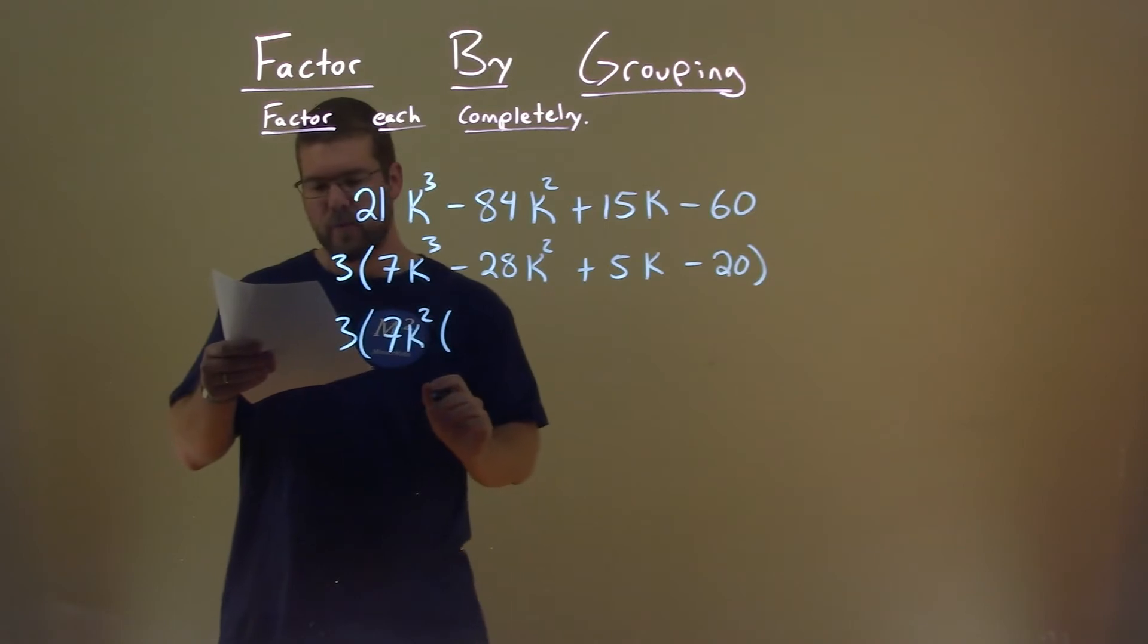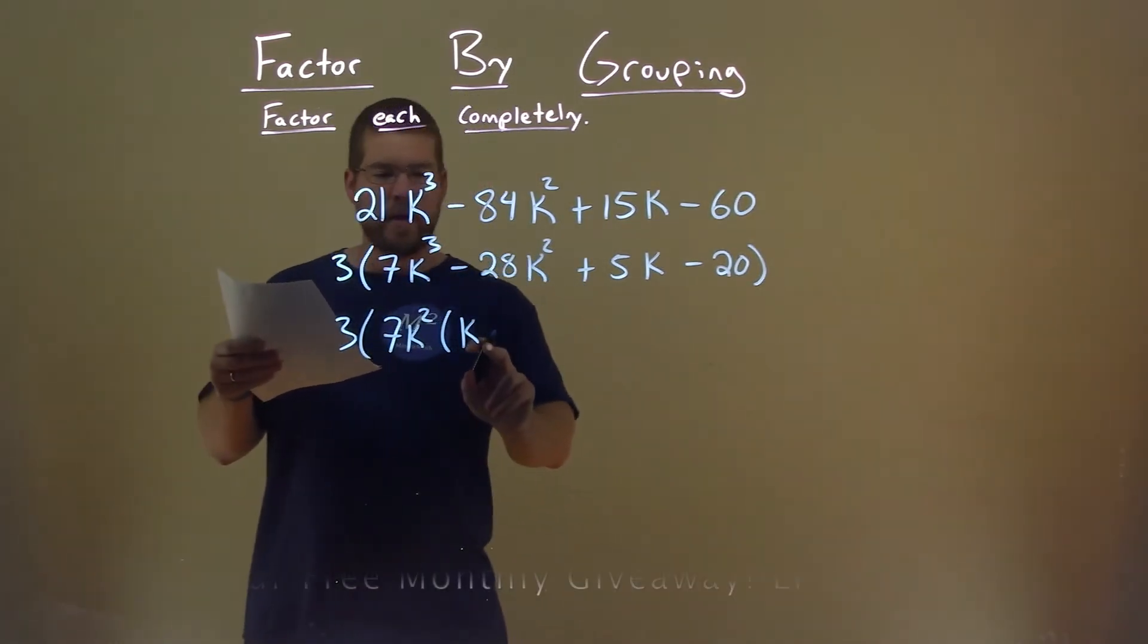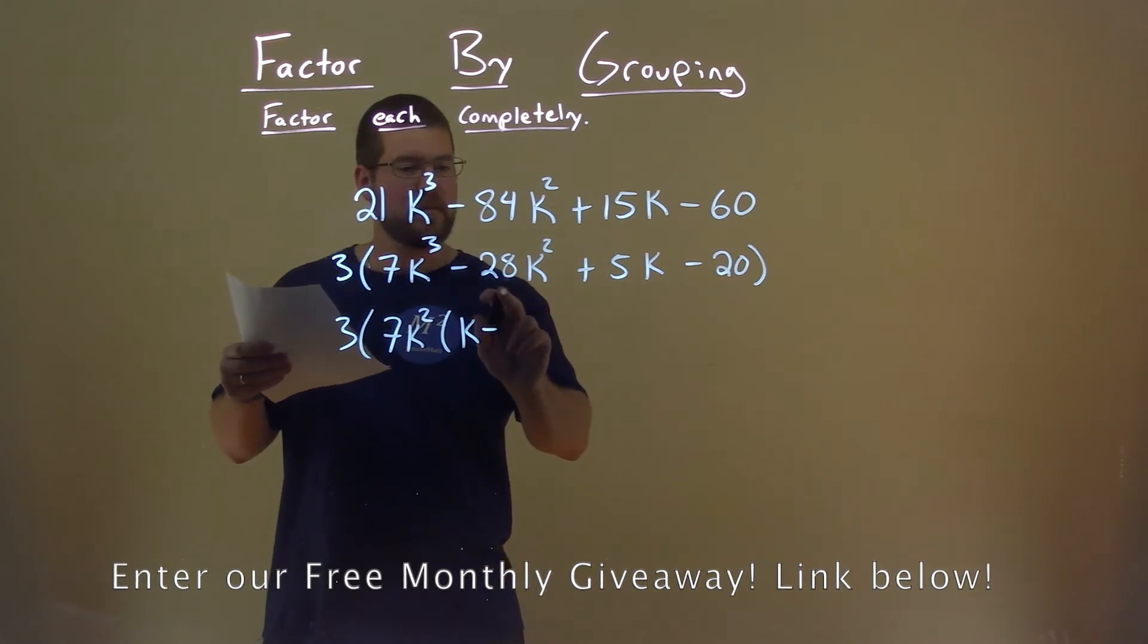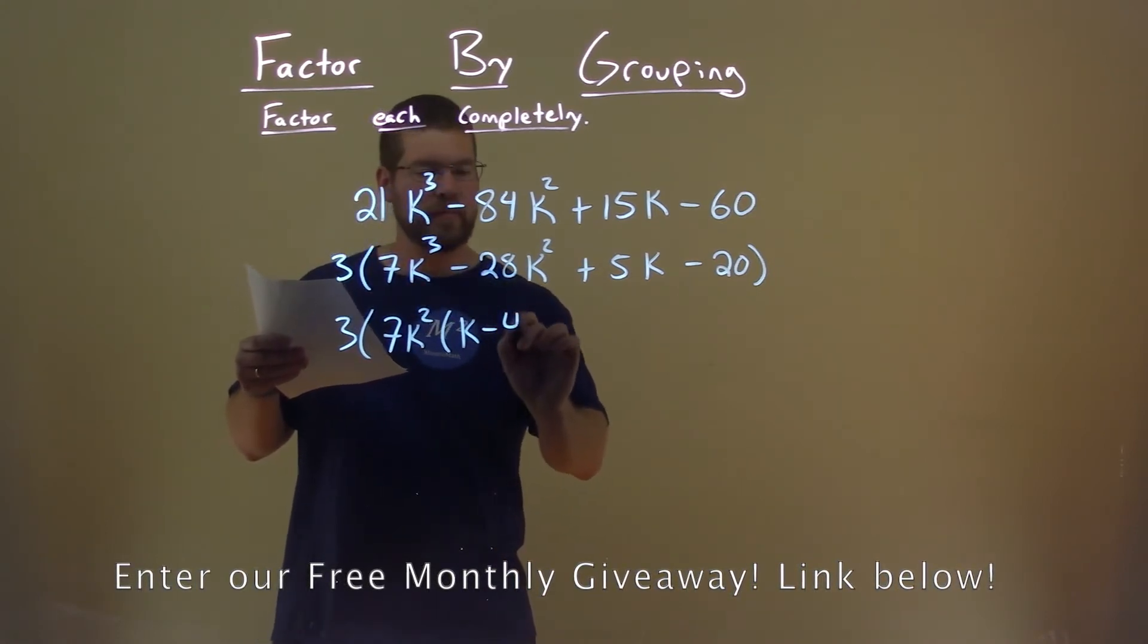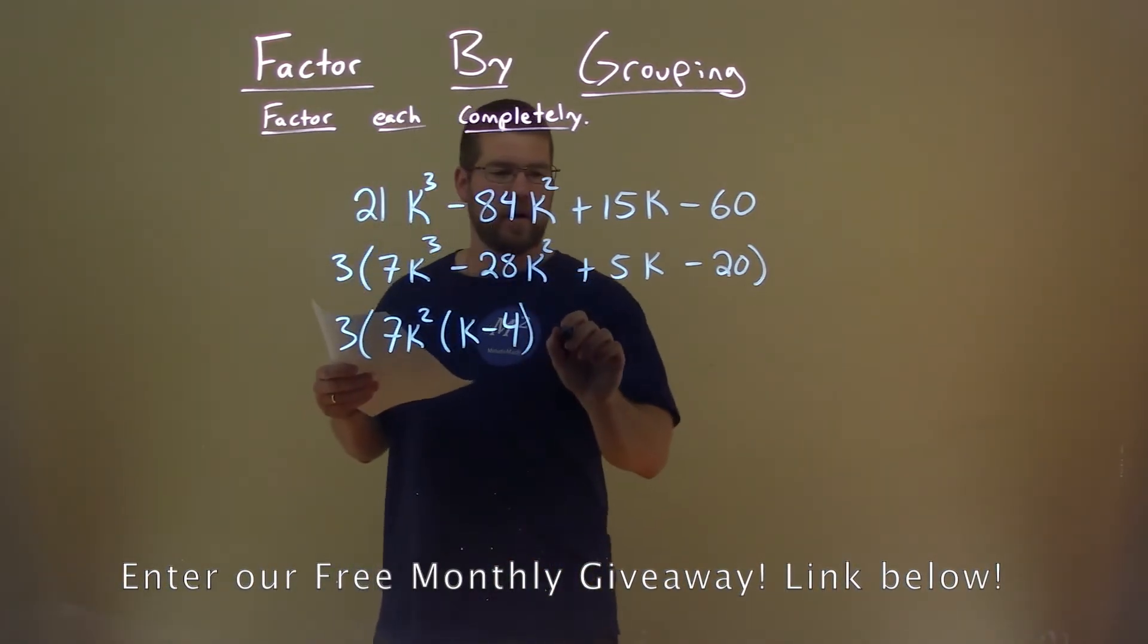what are we left with? Well, just 1k right here, 1k, and then in here we're left with just a 4. So 7k² goes into 28k² four times.